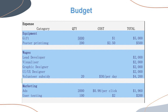This is the breakdown of our budget. Our expenses are basically used for equipment, wages, and marketing. For equipment, we spent on buying gifts and printing posters. For wages, we pay our group members and volunteers a subsidy because we need their assistance for sending out the gifts. For marketing, we bought 2,000 ads and covered user testing. The total comes to 19,760 dollars, so there will be 240 dollars left, which we will donate to Fed Square.